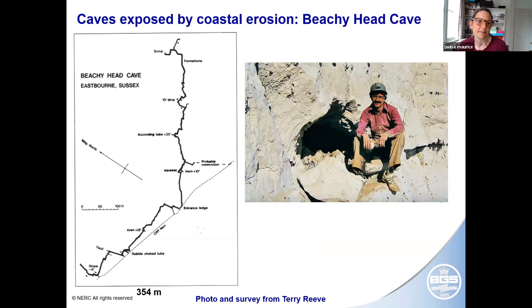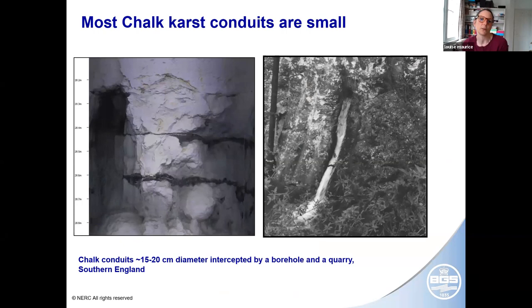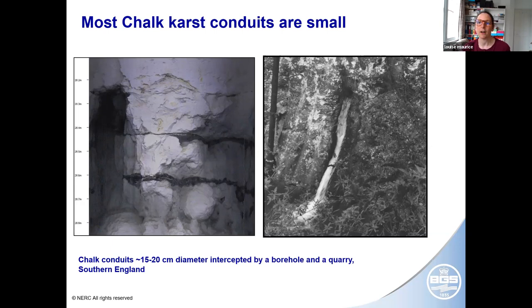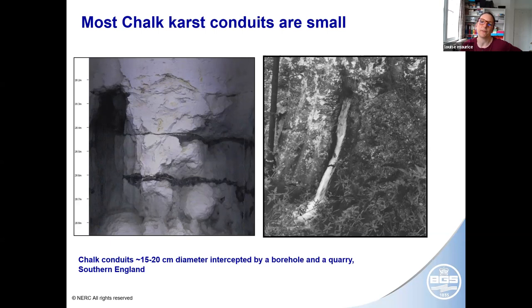Some caves have also been exposed by coastal erosion. This is Beachy Head Cave, which is actually the longest known karst cave in the chalk, just over 350 metres long. In the chalk, most karst conduits are small, which raises the question of why there are so few caves. We think there are a few possible reasons: the chalk bedrock has particularly high matrix porosity, which might mean water moves towards saturation more quickly; there's a very high primary fracture density, so maybe more fractures are enlarged to a smaller extent rather than a few enlarged a lot; and stream sinks might be quite transient because they're often developed on sediments which are easily eroded, so they don't stay in the same place for long geological periods.